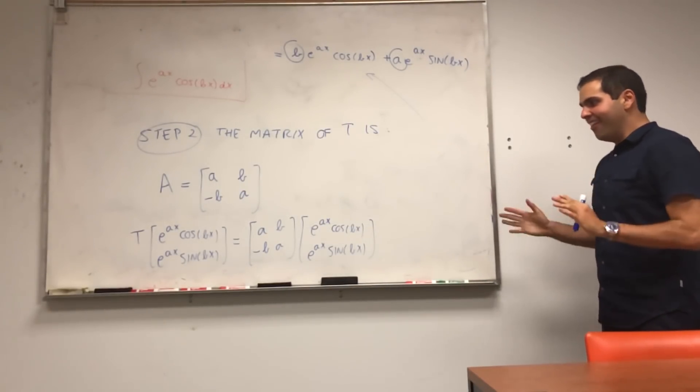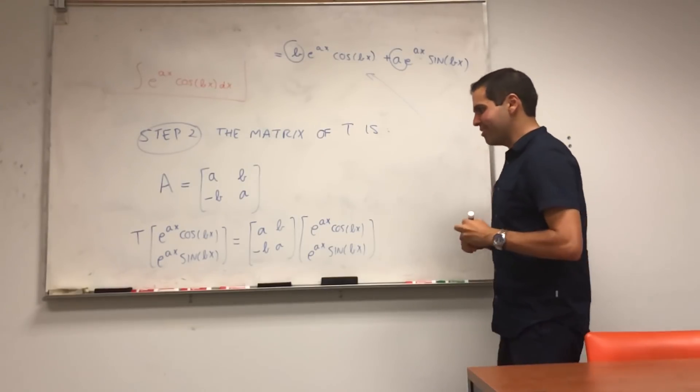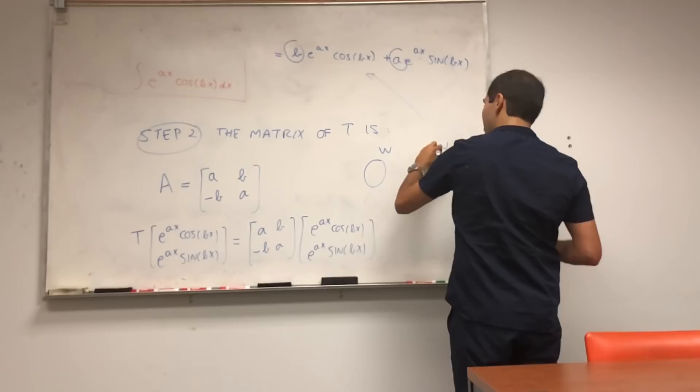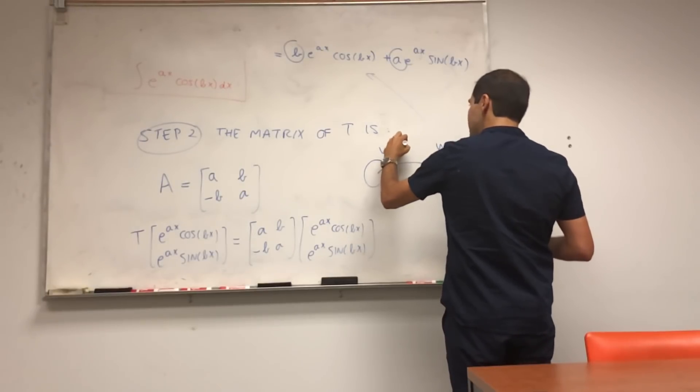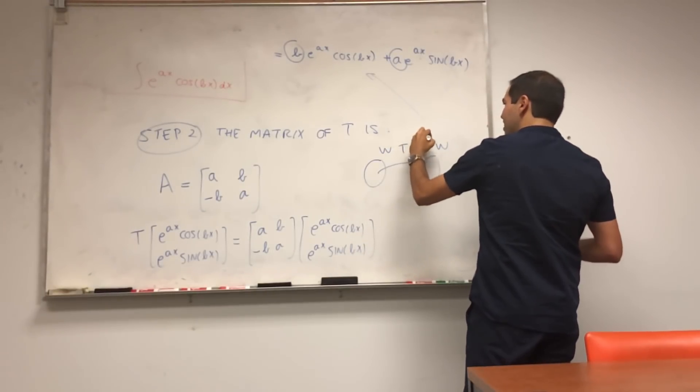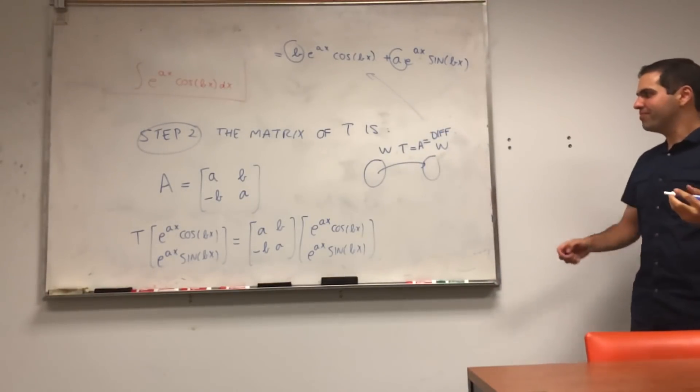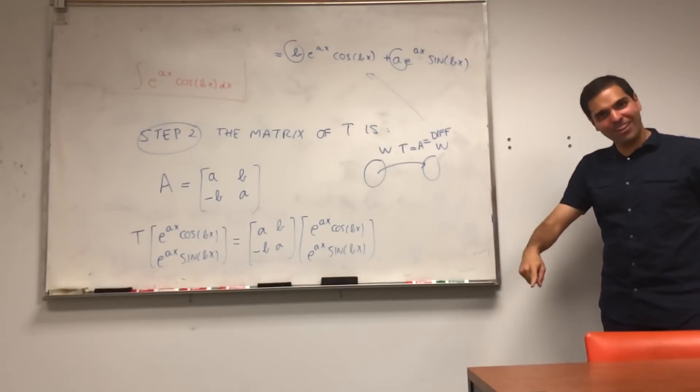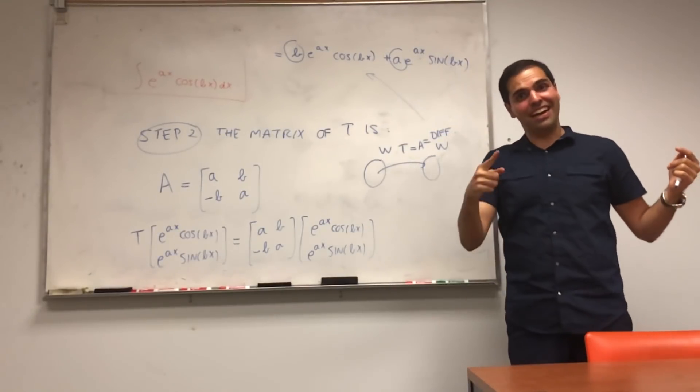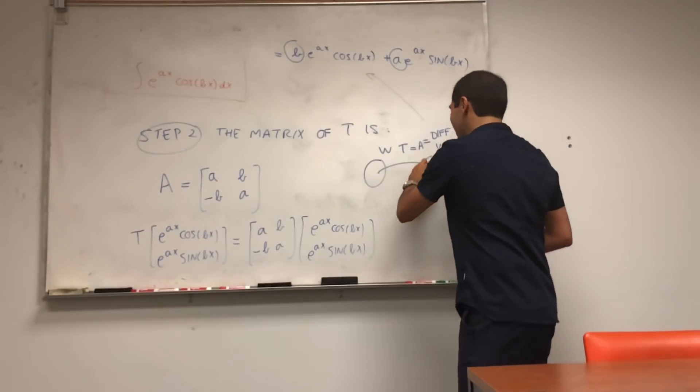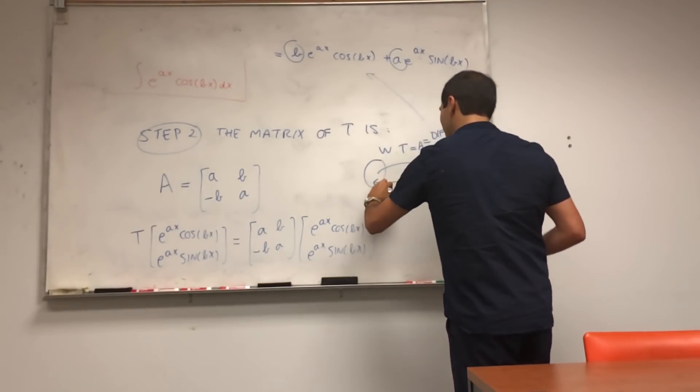Okay, in other words, here comes an important point. You have this space w, you have t, which is the same thing as a, which is the same thing as differentiation. And now what we want to do, we want to anti-differentiate, which is the reverse process.